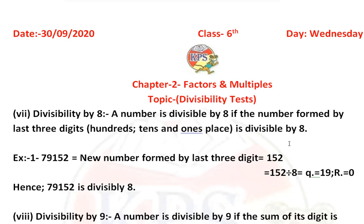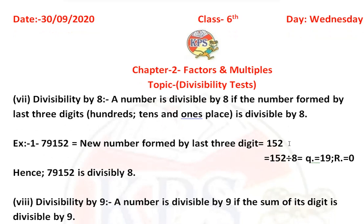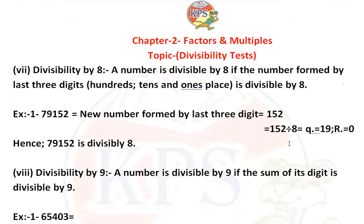Next is the divisibility rule of 9. The divisibility rule of 9 is the same as the divisibility rule of 3. If the sum of the digits of the given number is divisible by 9, then the number is also divisible by 9.